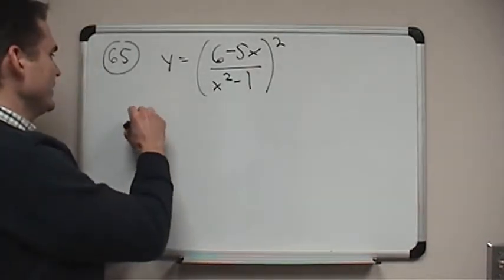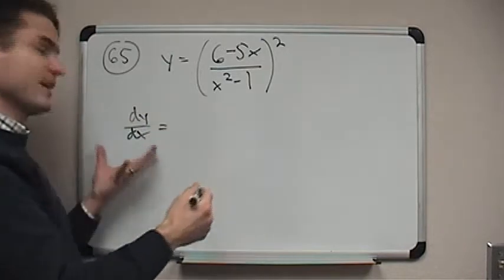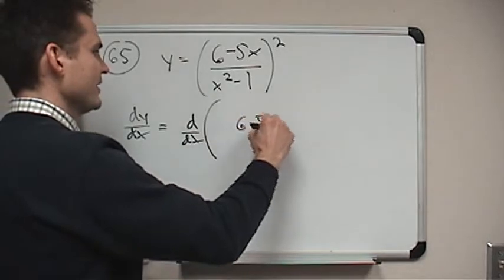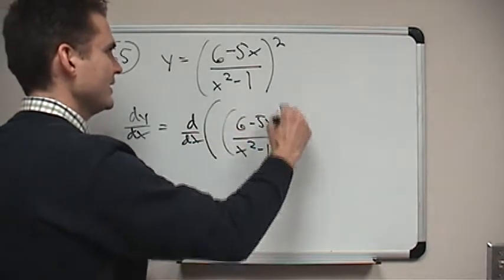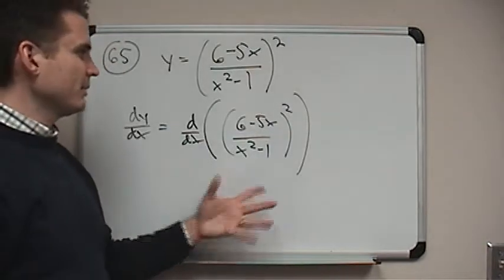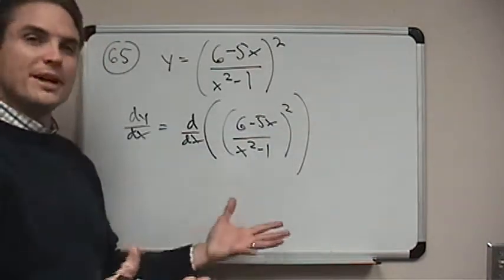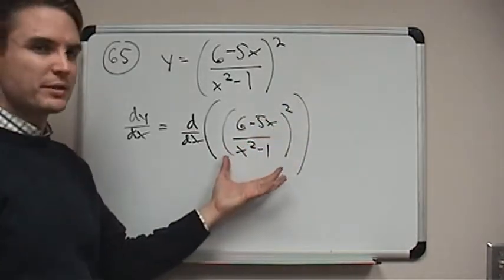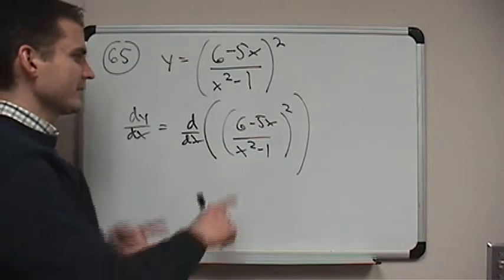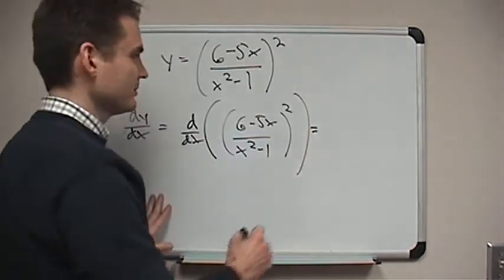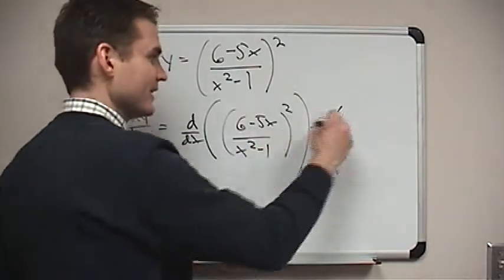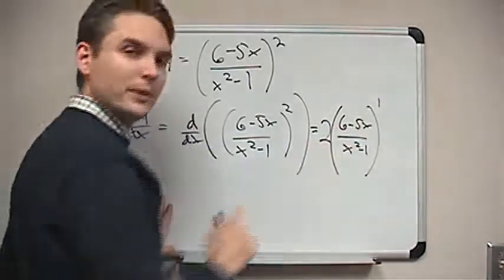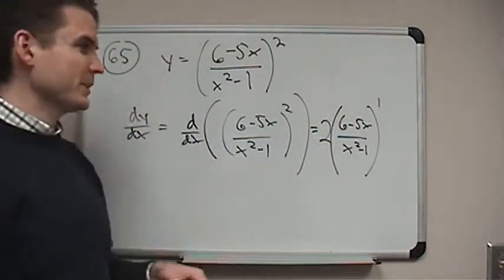So what do I mean there? Well, dy dx, the question is find the derivative of y. So we take the derivative of this whole thing, 6 minus 5x over x squared minus 1 to the power 2. And when you look at this, what you see in the basic outside of the expression is something that's squared. Whenever you have a function squared, you have to use the generalized power rule. So the derivative of this, according to the generalized power rule, it's 2 times the thing inside, 6 minus 5x over x squared minus 1 to the power 1.